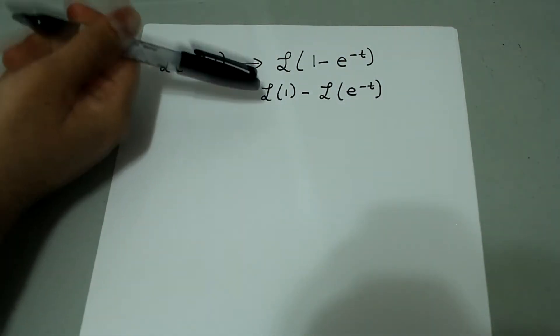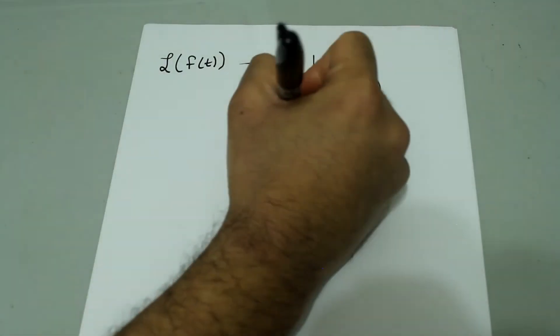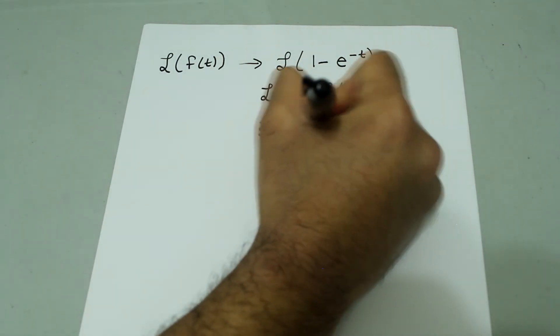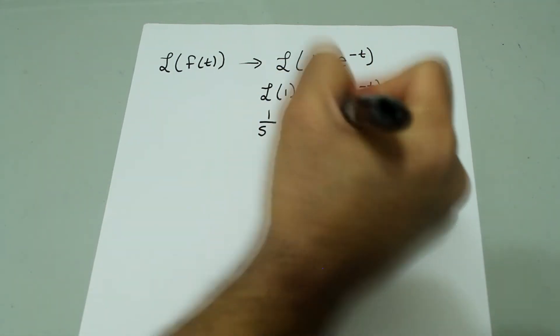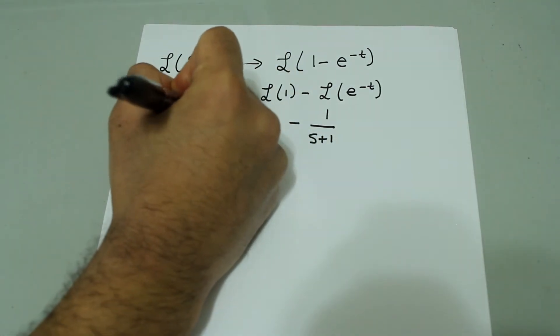Then Laplace of 1 is just 1 over s minus Laplace of e to the negative t is 1 over s plus 1. And that's equal to f tilde s.